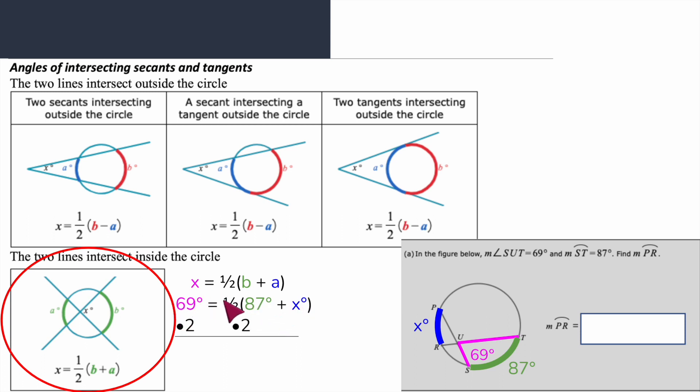69 times two is 138, and when I multiply by two on this side that eliminates the fraction. They cancel each other out. One half times two is just one. So I have 87 plus X equals 138. Now I'm going to subtract 87 from both sides and that tells me what's left over for this smaller arc, which is 51 degrees. Arc PR has to be 51 degrees.